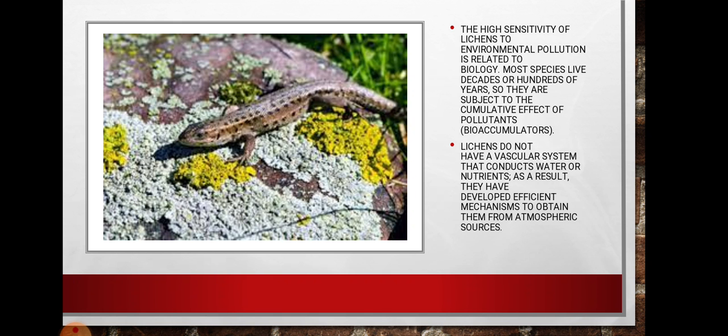The lack of stomata and cuticle causes lichens to absorb substances on the internal surface of the thallus. Therefore, they have little biological control over gaseous intake, and gaseous pollutants present in the air diffuse easily to the photobiont layer.